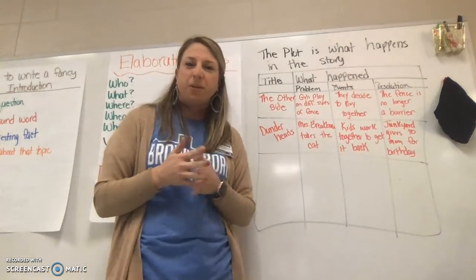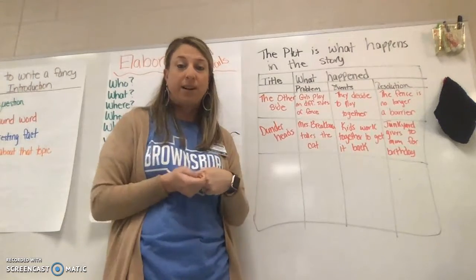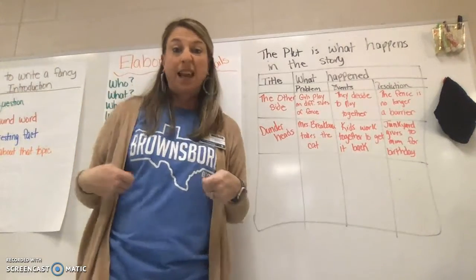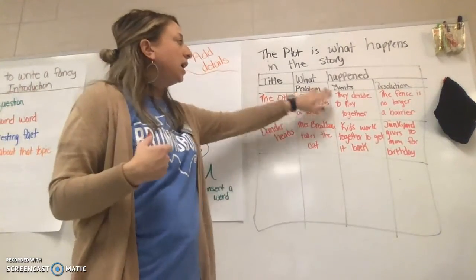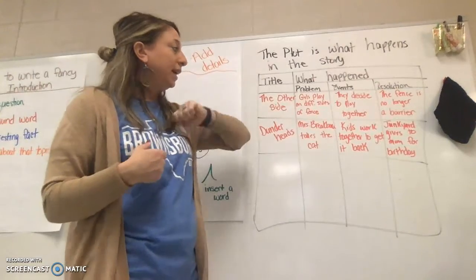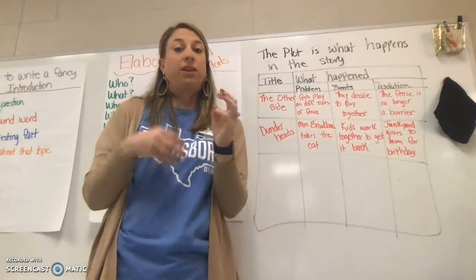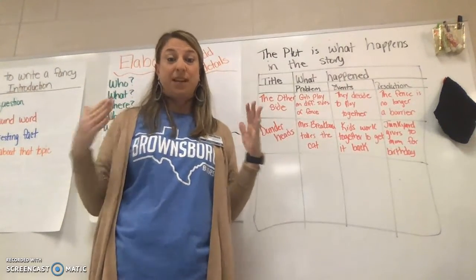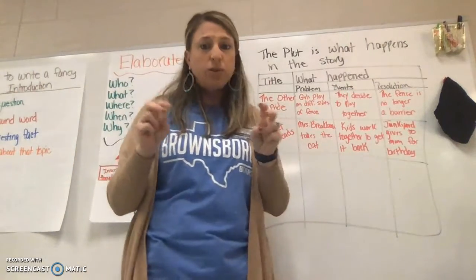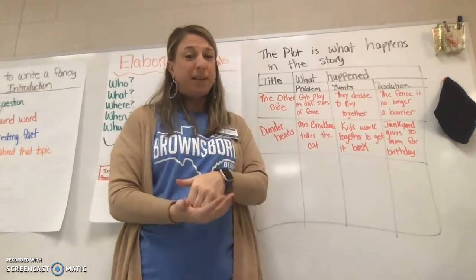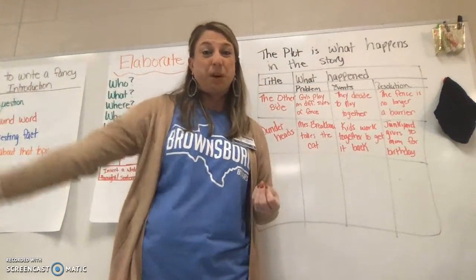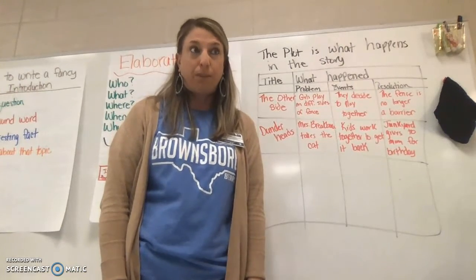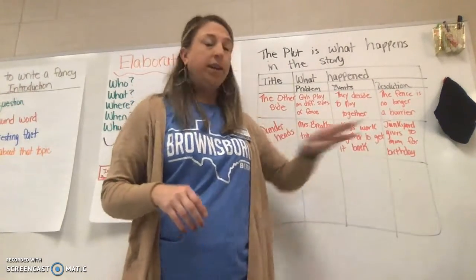Think about The Dunderheads with Miss Breakbone — the book about the kids who wanted to get the cat back that we read earlier in the year. The problem or the rising action would be Miss Breakbone takes the cat. The climax would be the kids working together to get it back — breaking into her house and all of those things. That's the climax, the most exciting part of the story. But the resolution, when the problem was really solved — because the main problem is she took the cat he wanted to give his mom for her birthday — is when the kid is able to give the cat to his mom for her birthday. That would be the resolution.